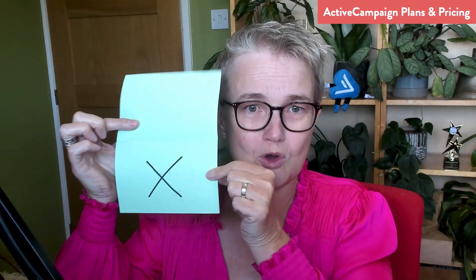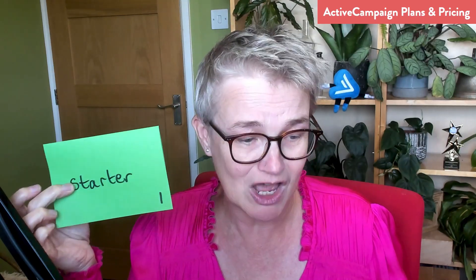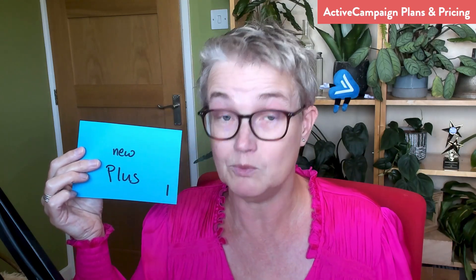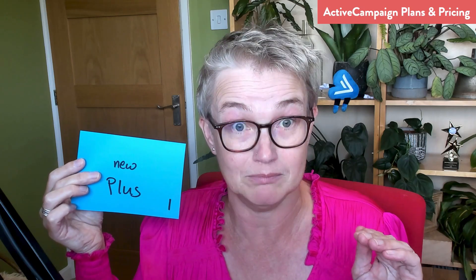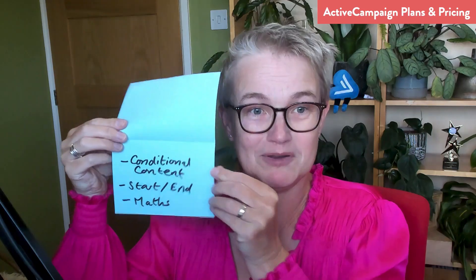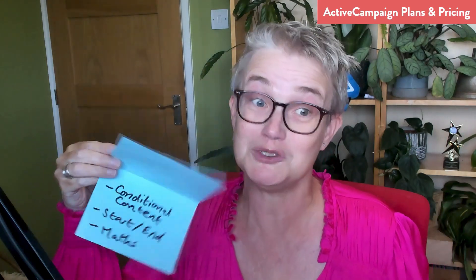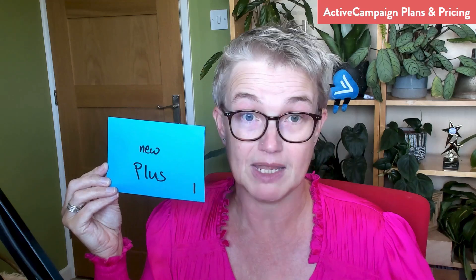I know we all hate price increases, but pricing is going up across the whole sector. ActiveCampaign is capping the price increase so nobody should see more than 30%. The old Light plan is going - no more old Light plan. The lowest price new plan is called Starter; it comes with one user. If you're on the Light plan, you are highly unlikely to get invited to migrate to Starter because there's not a lot you can do there in terms of automation. You would probably be recommended to move to the new Plus plan, with any increase capped at 30%. If you are on the old Plus plan, there are significant changes: conditional content, start and end automations, and the Perform Maths function are moving out of Plus.